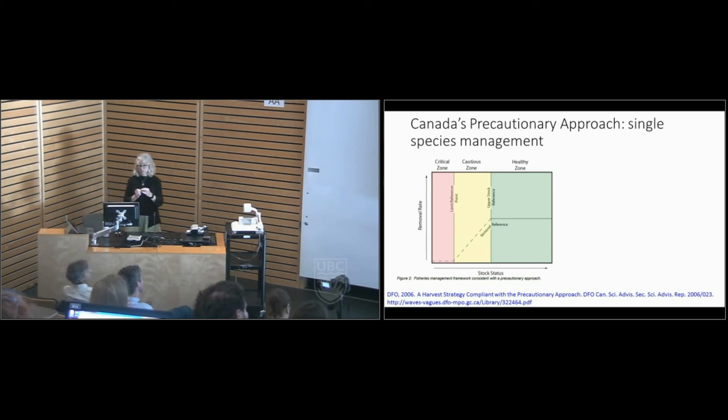So I'll just start with Canada's precautionary approach. This is also going to be enshrined in the new Fisheries Act in law. Some of you will be familiar with a graph like this. This is a harvest control rule. It's characterized by three zones. You have your stock status or biomass on the x-axis, your removal rate on the y-axis. You have a critical zone when the stock is below its limit reference point, a cautious zone, and a healthy zone when it's above its upper stock reference. We're mandated to apply a rebuilding plan when a stock is in the critical zone.